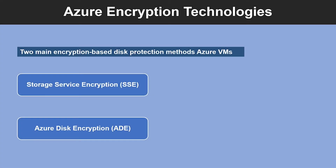The primary encryption-based disk protection technologies for Azure VMs are Storage Service Encryption or SSE, and Azure Disk Encryption or ADE. The Storage Service Encryption is performed on a physical disk in the data center, and the Azure Disk Encryption encrypts the virtual machine hard disk.